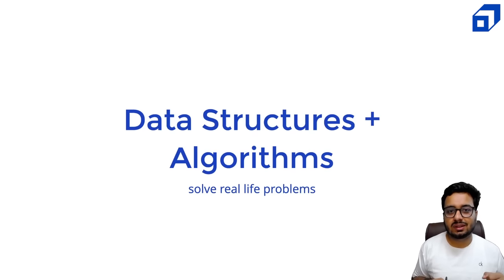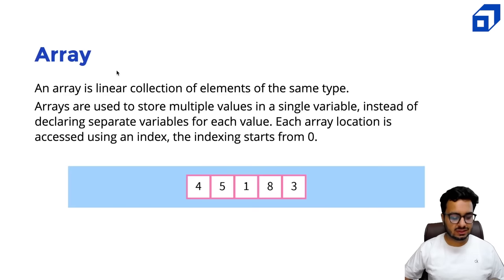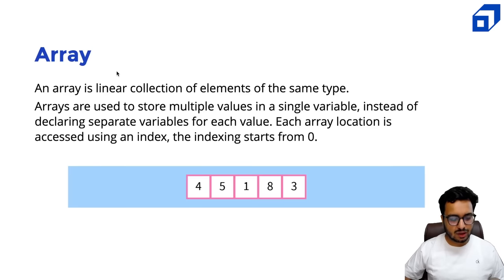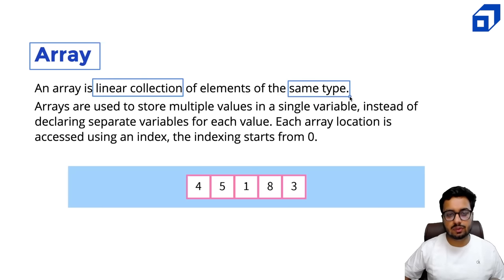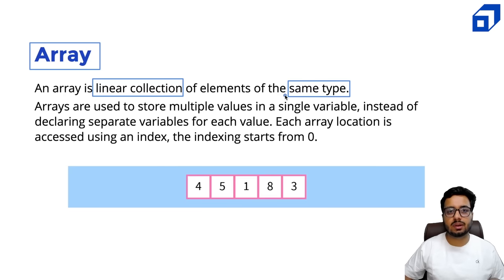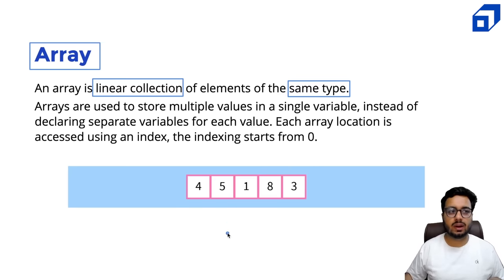Now let us start with the array, which is the simplest and most widely used data structure. What is an array? An array is a linear collection of elements of the same type — this is true for Java. Other languages like Python also support heterogeneous arrays, meaning you can put different types of data such as integer, string, and float inside one array. Arrays are used to store multiple values in a single variable.